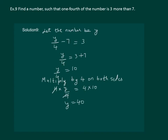We can confirm our answer by putting y equal to 40 in the left hand side of the equation. That is 40 by 4 minus 7, which gives us 10 minus 7, which is equal to 3, the right hand side of the equation. Hence, we have confirmed that y equal to 40 is the required answer.